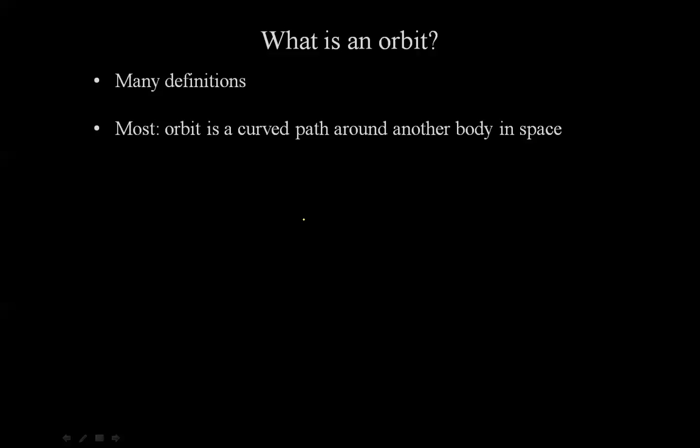For example, if I were to draw this very explanation here, or this definition, I can say that this, for example, is some body in space, and that an orbit is a curved path. Now we know from having seen pictures and movies that an orbit generally looks like this.